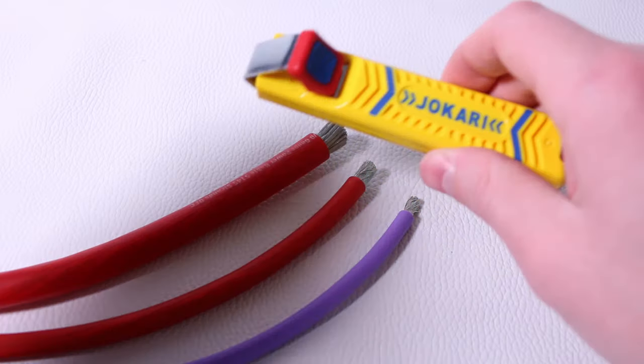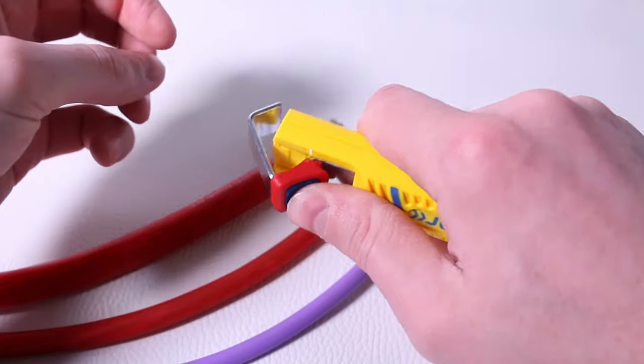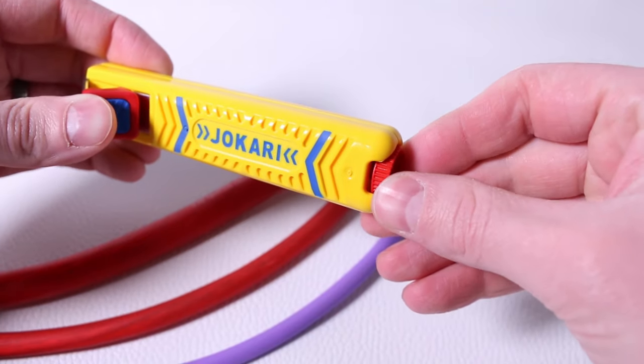There are a couple of different ways to remove the insulation from these large wires, but it can be time-consuming and it seems like it never fails that you end up cutting some of the strands of wire. What if I told you there was a tool that allowed us to strip that insulation in seconds and get a really clean cut?